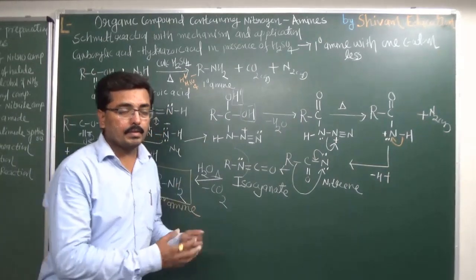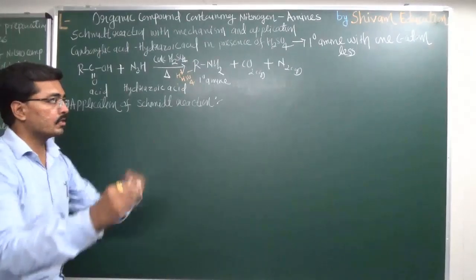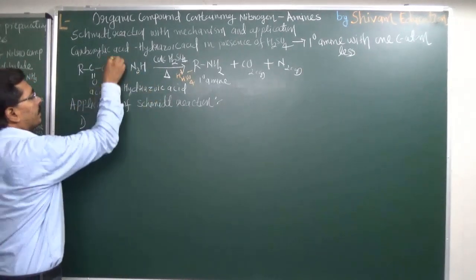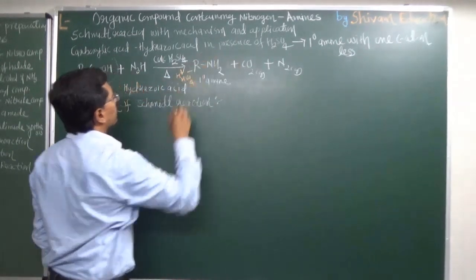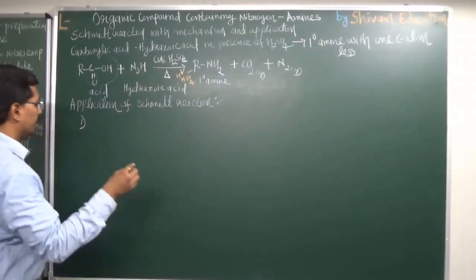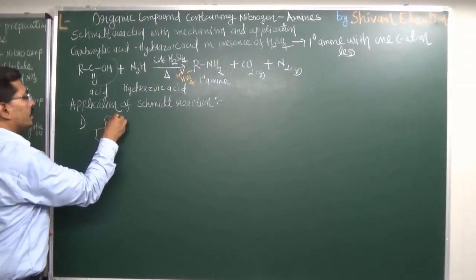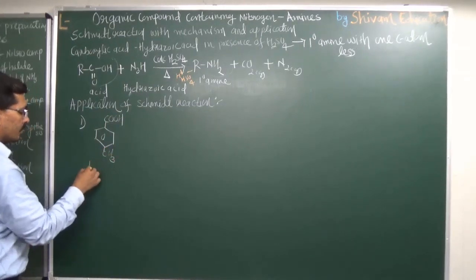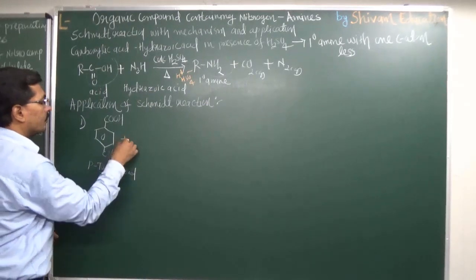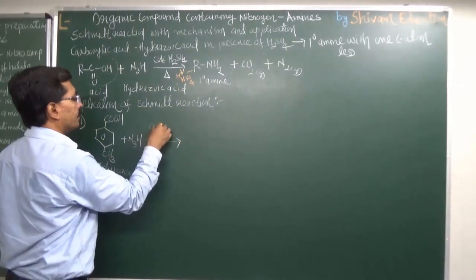The Schmidt reaction is also used for ketones. A variety of applications exist for Schmidt reactions. In general, the carboxyl (-COOH) group is directly converted into an amine (-NH₂) group under conditions of N₃H (hydrazoic acid) in the presence of concentrated sulfuric acid. For the first application, consider paratoluic acid — a benzene ring with a -COOH group and a -CH₃ group.